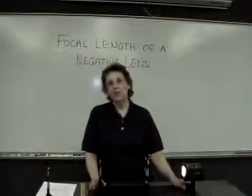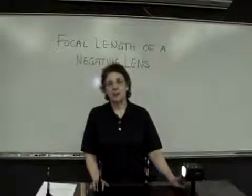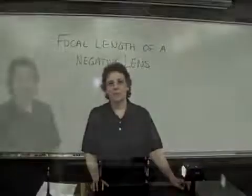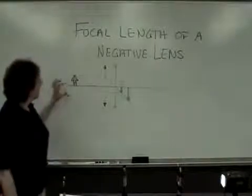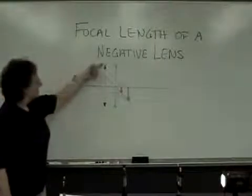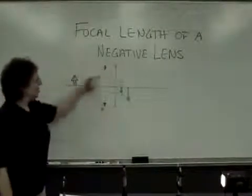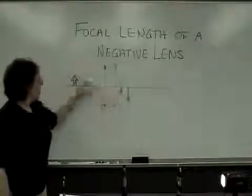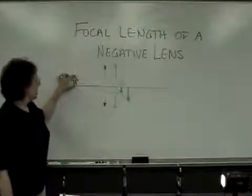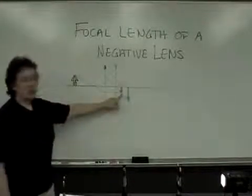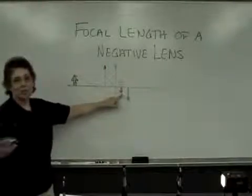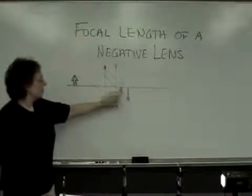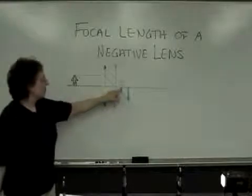In order to understand what's going on, it's very helpful to first look at a ray diagram of the situation. What happens in this lab is that the initial converging lens forms an image of the object. That image is a real image — it can be projected on a screen, it's inverted, and has all the properties of a real image.